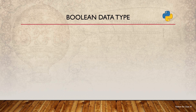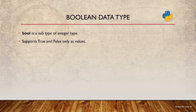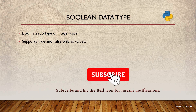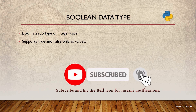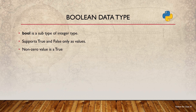Finally, I am going to consider the Boolean data type. Bool is a subtype of the integer data type and supports only two values: True or False. Note that T is a capital letter in the True literal and F is a capital letter in the False literal. The Boolean data type considers any non-zero value as True and 0 as False.